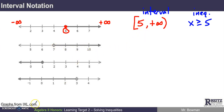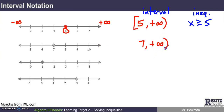For the next example with x > 7, the inequality starts at 7 and ends toward positive infinity. Infinity always gets the rounded bracket. Since we don't include 7, we also use a rounded bracket there. So the interval notation is (7, ∞). The difference between square and round brackets indicates whether we're including or excluding that boundary value.